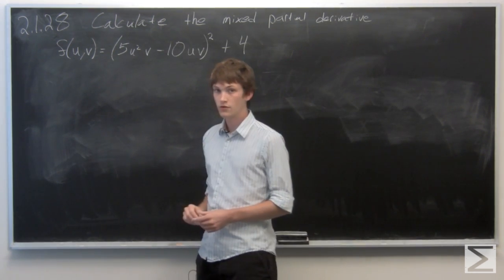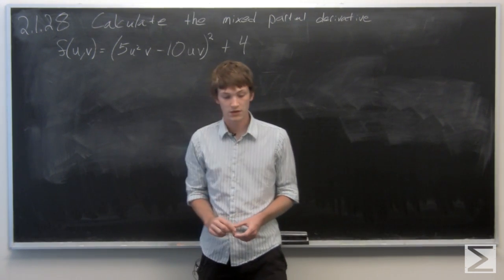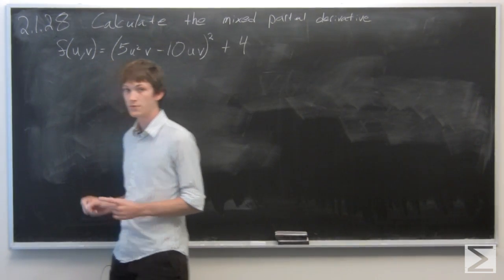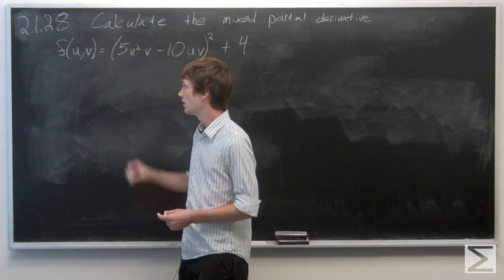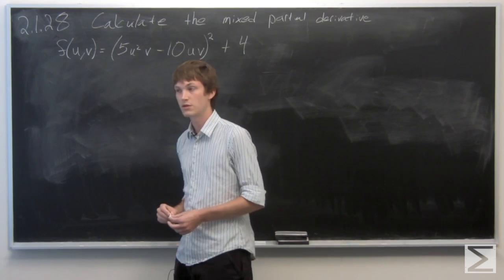So we're going to take the partial derivative with respect to u and then the partial derivative with respect to v. Note that you can also do it in the opposite order and you'll get the same result. It just happens that it works out a little bit easier if we take the partial derivative with respect to u first.